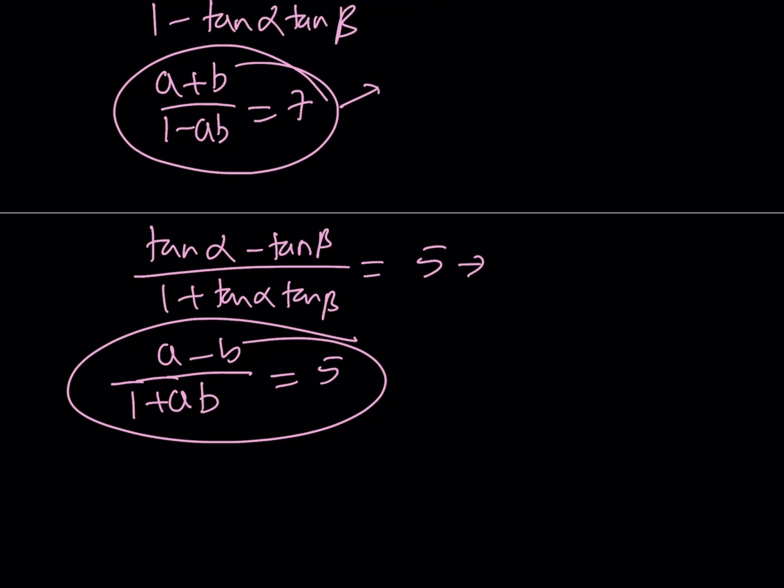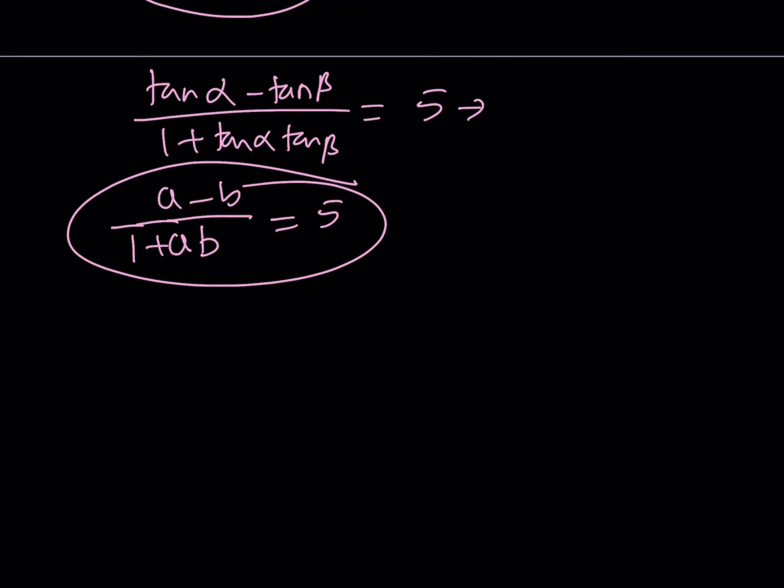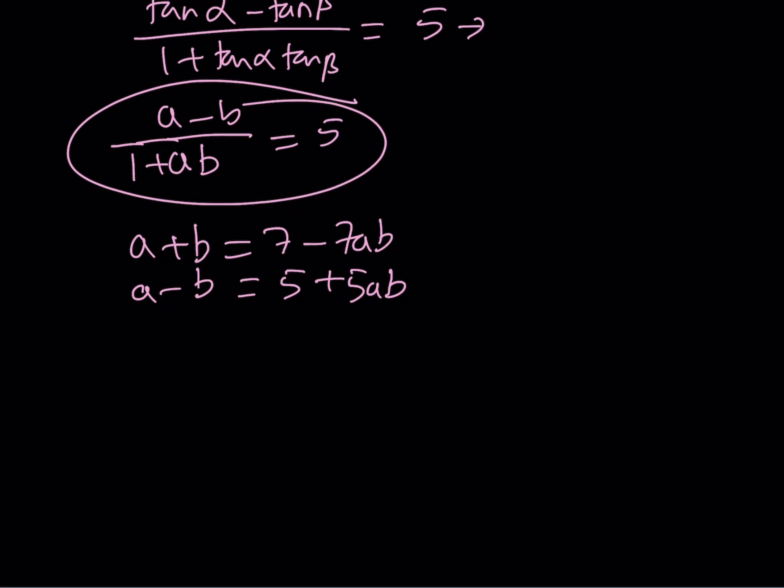I'm going to cross multiply in the first one. That's going to give me a plus b equals 7 minus 7ab. And the second equation is going to give me a minus b equals 5 plus 5ab. Now to solve this equation, we can use substitution, but I don't think that's a very good idea. I'm going to be using a different approach: elimination.